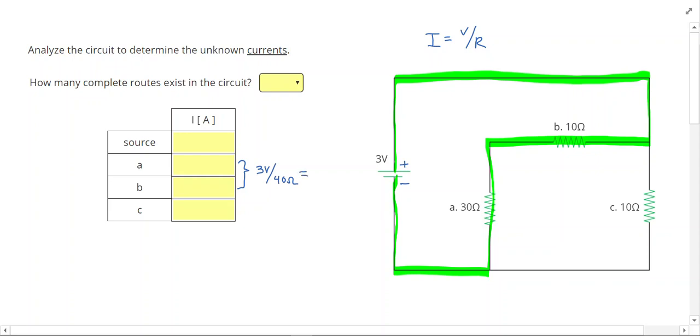So 3 divided by 40 gives me 0.075 Amps, and that will be the current for A and B.